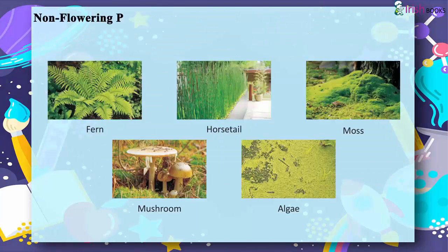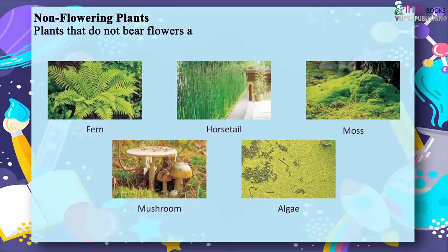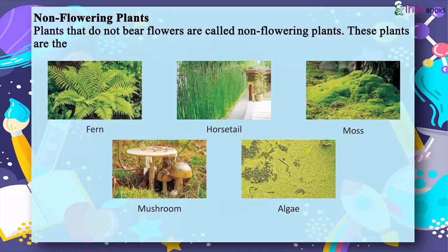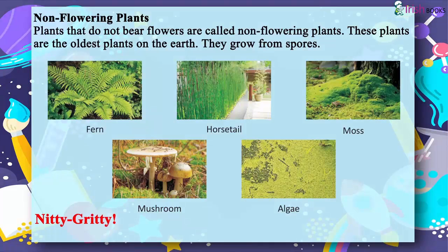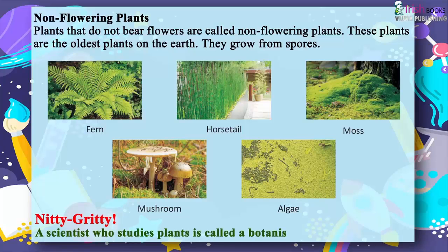Non-flowering plants: Plants that do not bear flowers are called non-flowering plants. These plants are the oldest plants on the earth. They grow from spores. Examples: Fern, horsetail, moss, mushroom, algae. A scientist who studies plants is called a botanist.